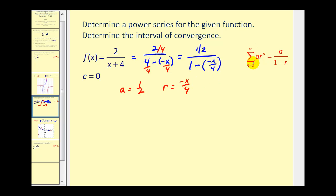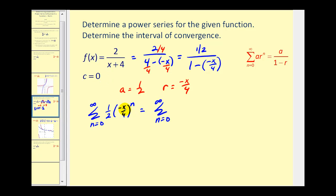Now we can write the power series to represent this function. We have the summation from n equals zero to infinity of a, which is one-half, times r to the power of n, where r is negative x over four. We can clean this up by factoring out negative one to the power of n and rewriting it with x over four in the numerator.